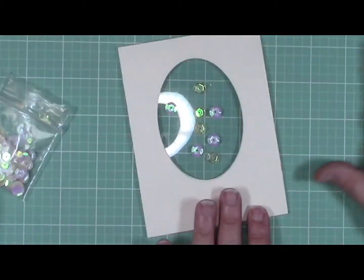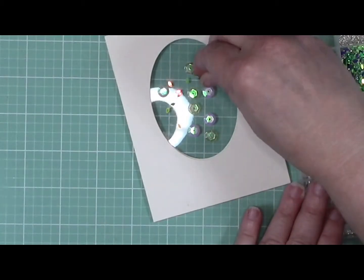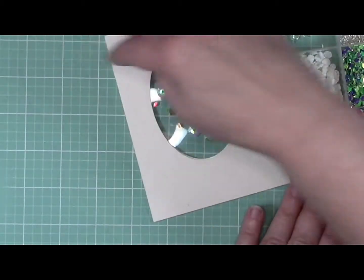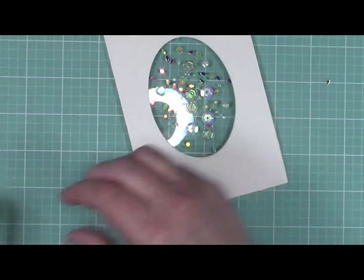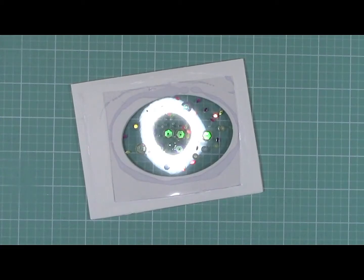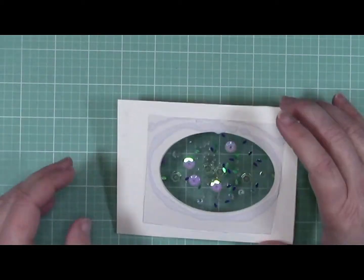Once that's done, you can start filling it with your beads and sequins and whatever else you want to put in there. I made sure to clean the inside of the window quite well to remove any debris before I put in those sequins, and then sealed it on the other side with another piece of clear packaging.